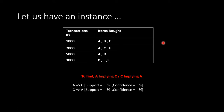We are going to have some data here, and the data is all represented with transaction IDs. I have got 1000, 7000, 5000, and 3000 as the transaction IDs, and the items bought respectively are ABC, ACF, AD, and BEF. So the items that are sold are A, B, C, D, E, and F, and each transaction is connected to some of these items which are bought together.